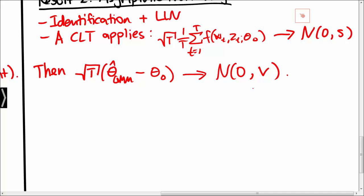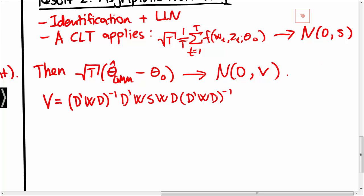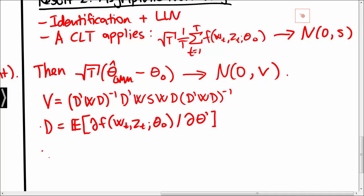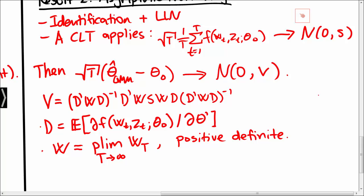Under these conditions the GMM estimator is asymptotically normally distributed. The asymptotic covariance matrix V has a structure that depends on the first derivative of f, the asymptotic variance of f denoted S, and the weight matrix W. Here d is the first derivative of the expectation of f, and W is a positive definite matrix that can be thought of as the limit of the weight matrix. The asymptotic covariance matrix of the GMM estimator therefore relies on the choice of weight matrix.